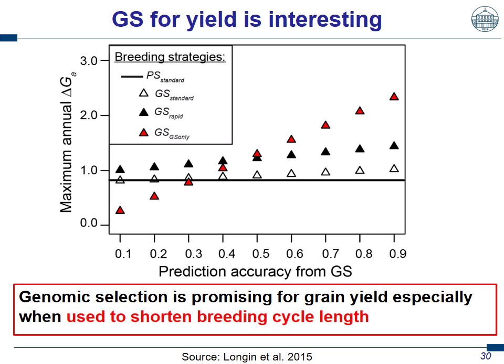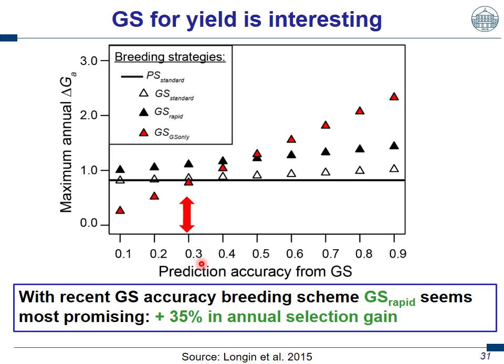Thus, genomic selection appears promising for grain yield in hybrid breeding, especially when used to shorten the breeding cycle length. When we look at the scenario where prediction accuracy across cycles on lines without any GCA information is 0.3, the use of the genomic selection rapid breeding scheme is of high interest because we get a 35% higher annual selection gain than the phenotypic breeding scheme. And 35% is really a big advantage — at least in registration trials in Germany, we have roughly a 1% annual yield advantage of new lines, so 35% would mean a 35-year advantage.